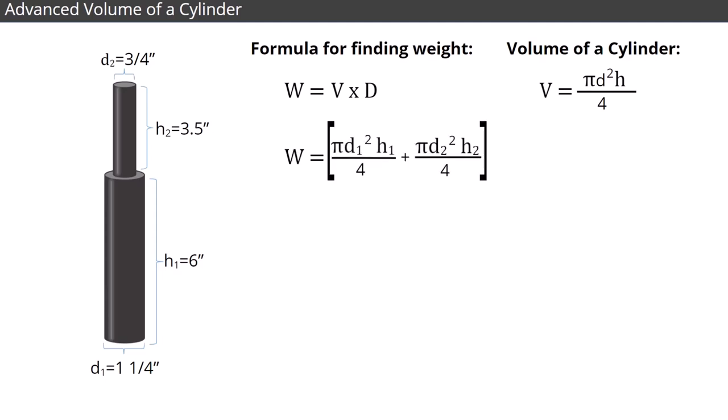To find the volume, we add together the volume of the two individual cylinders. Remember, the formula for the volume of a cylinder is v equals pi d squared times the height and all divided by 4.